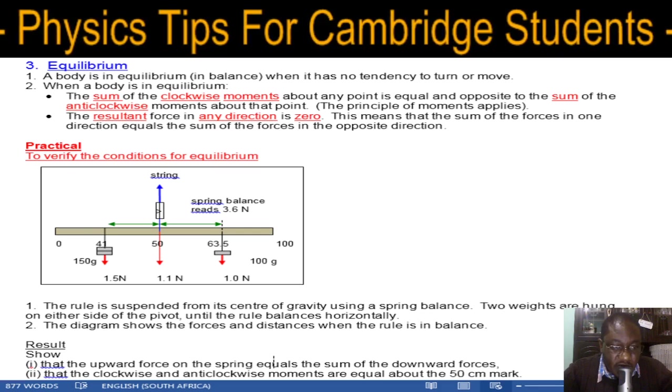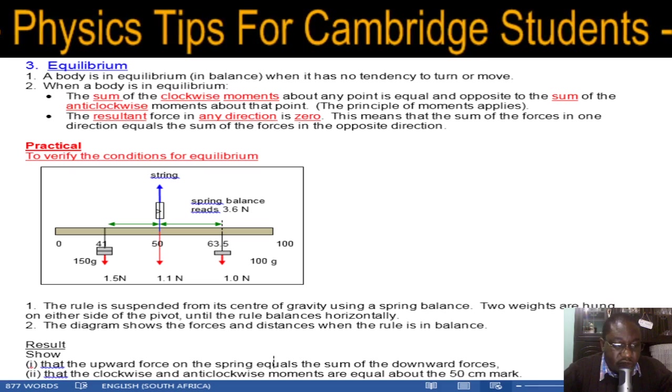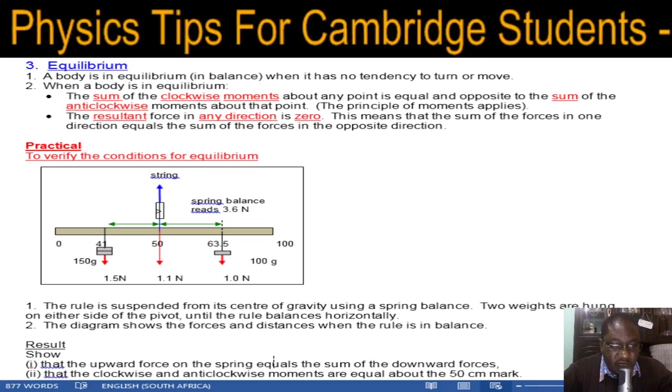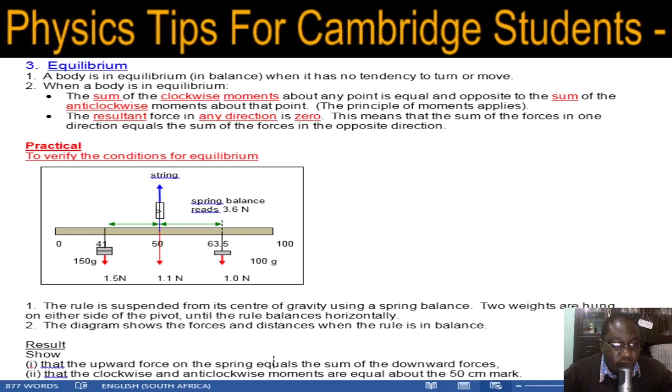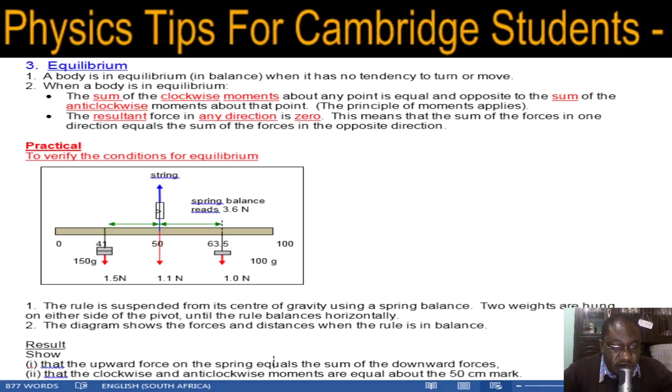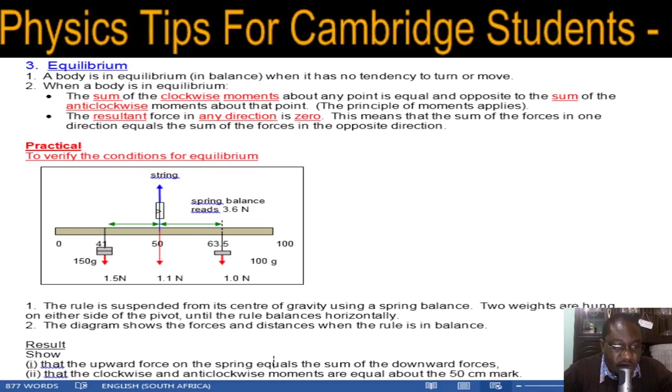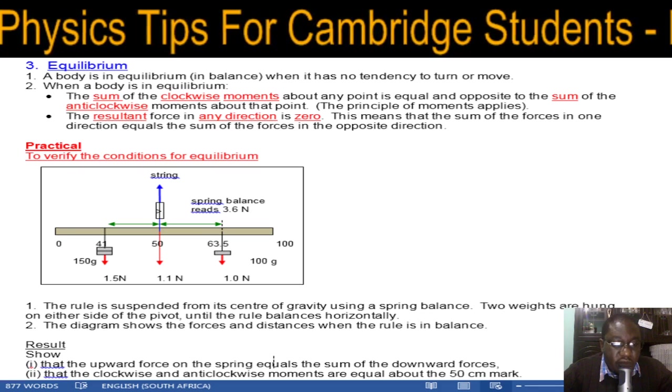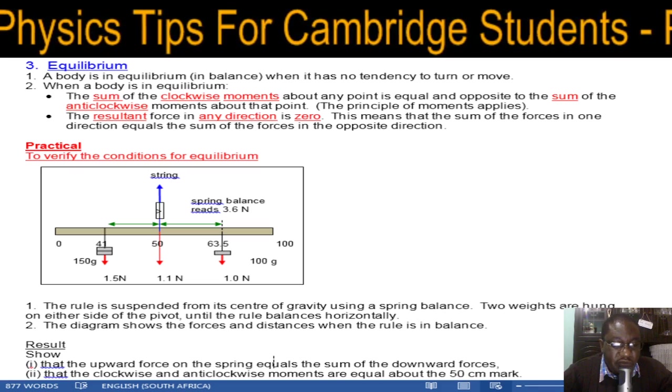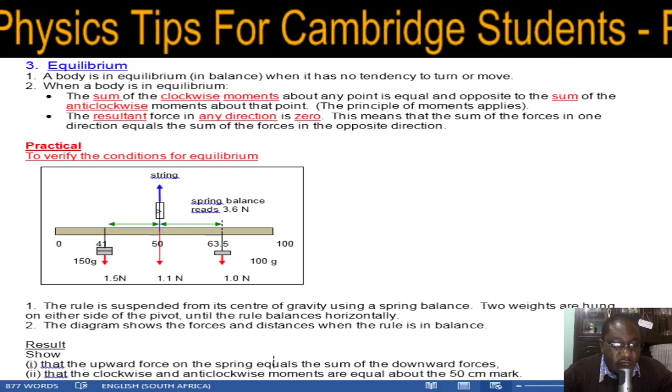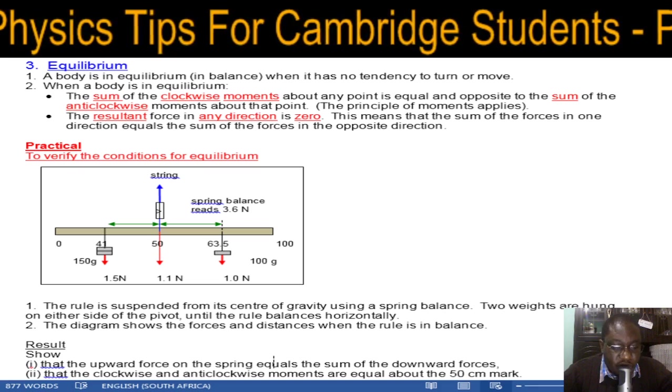You've got weights on either side of the halfway mark of the meter. As you add weights and restore the balance, you find that the forces from the weights and the weight of the meter will equal the reading you get from the spring balance upwards. This you find out when you do the experiment.